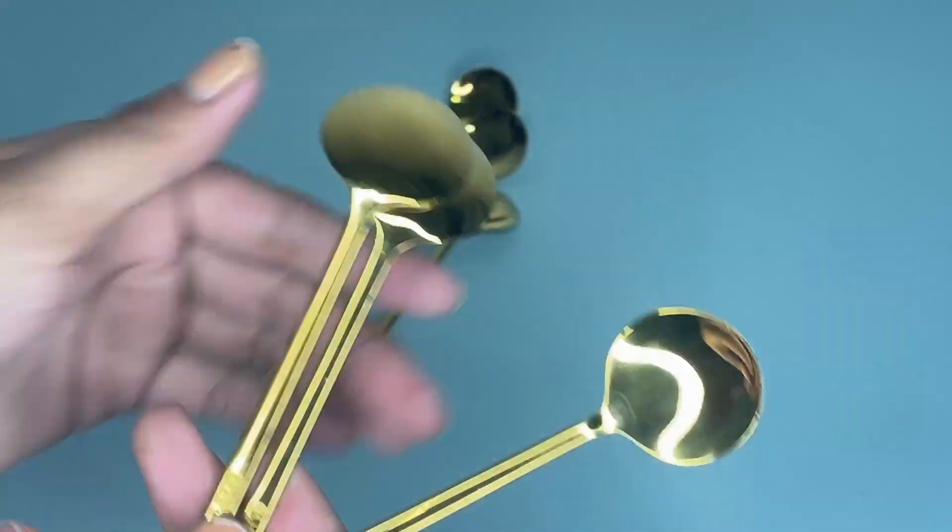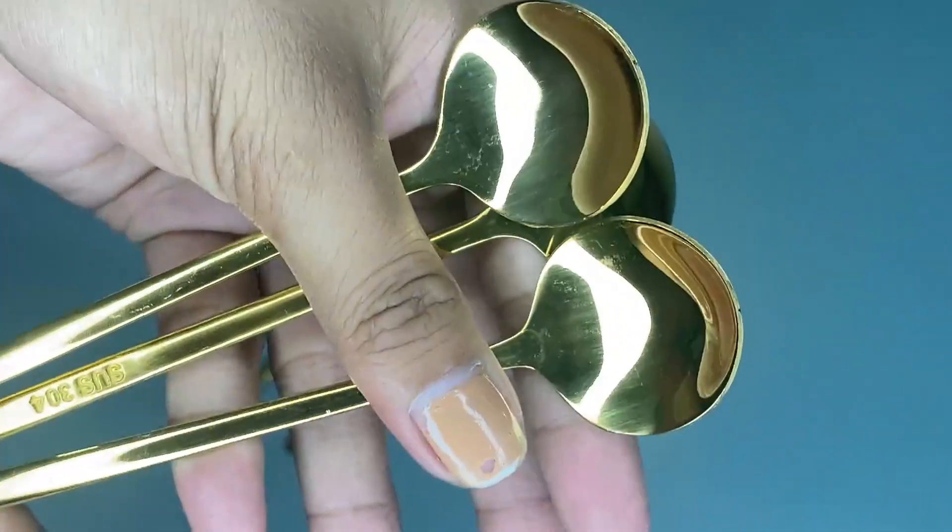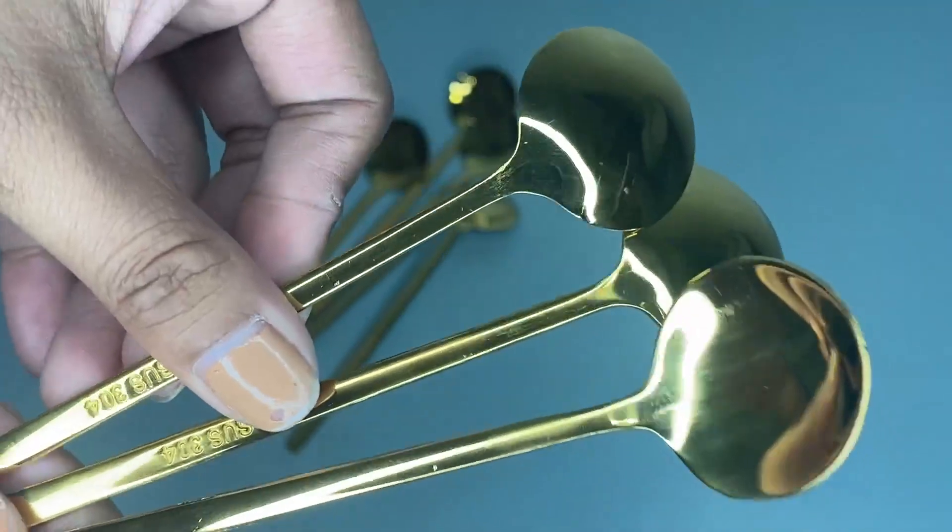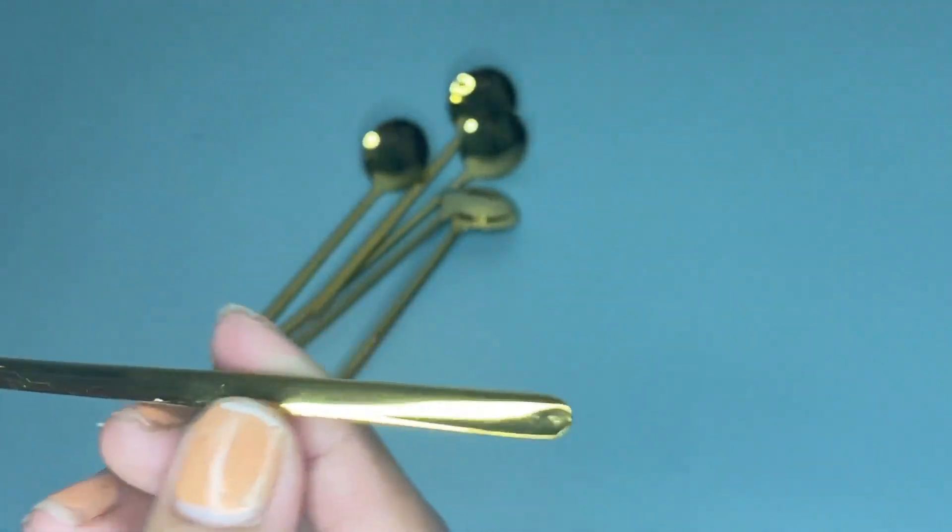These are made of stainless steel and are durable and sturdy. Each spoon measures 5.3 by 1.3 inches and has a modern design.